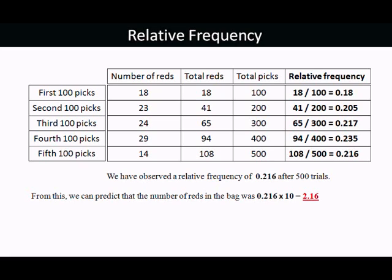So out of 500 trials, we've observed a relative frequency of 0.216. Now, there were 10 reds in the bag. So from that, we can predict that there are 2.16 red chips, because 2.16 is the proportion of the time that we're observing red. So we expect that that relates to how many reds there are in the bag. Well, of course, you can't have 0.16 of a chip, so you would predict that there are 2 red chips in the bag.